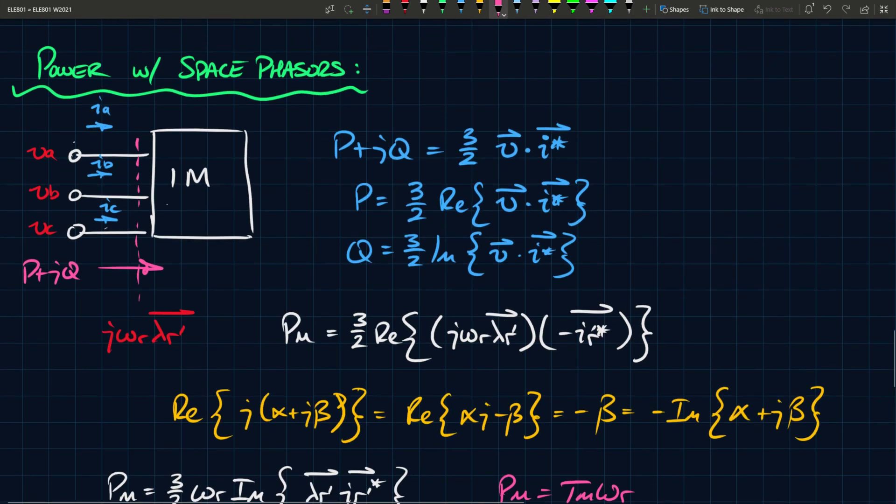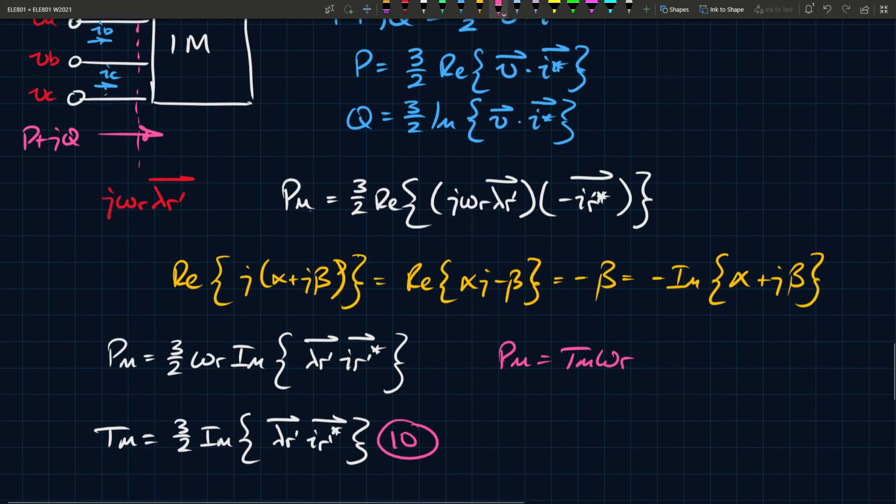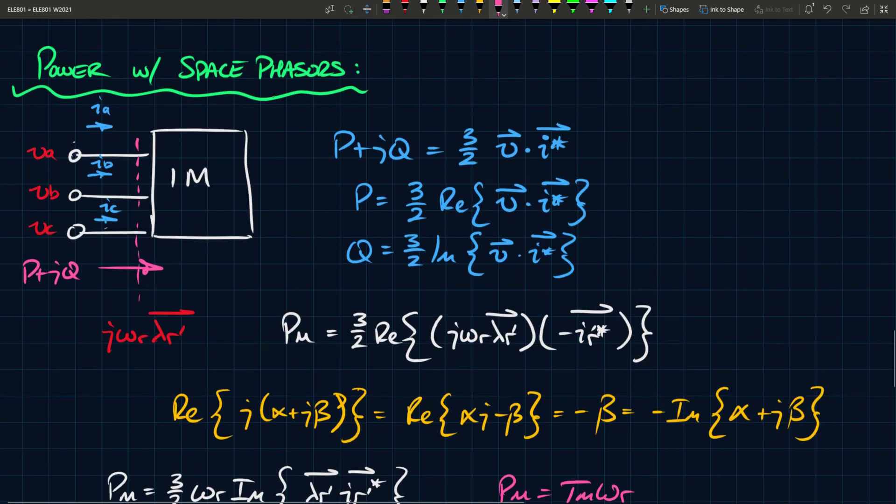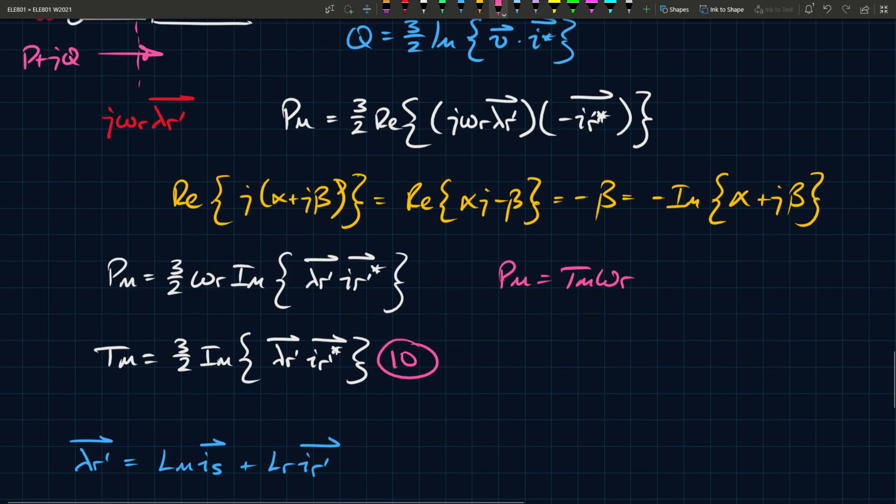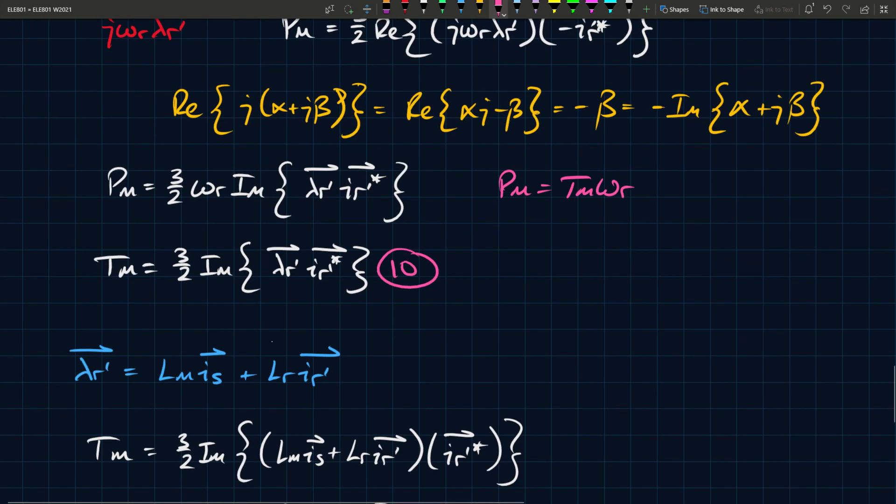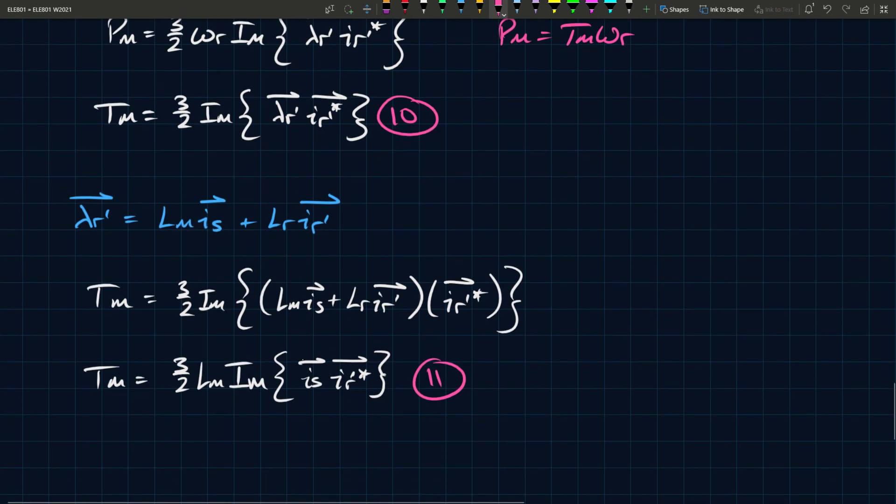So what have we done? We've established how we can represent the power in the induction machine based on these space phasors. And we've established an equation for the torque, which is actually a very important step. This is the equation we established. Maybe we put a box around that. And this is the equation that we will use later on to control the torque. Because torque control is one of the most important things in motors. Torque and speed control is really all it comes down to based on power.